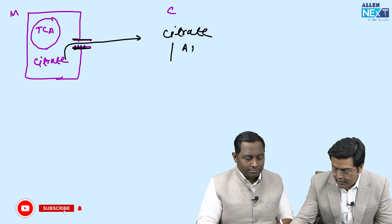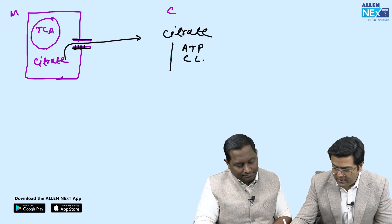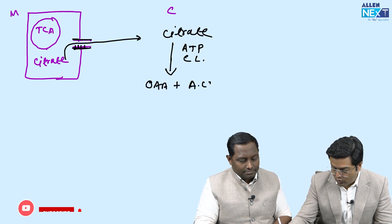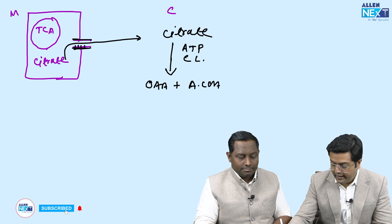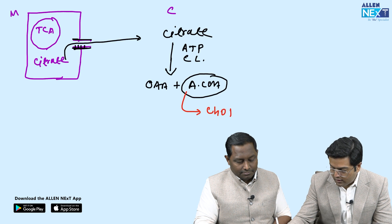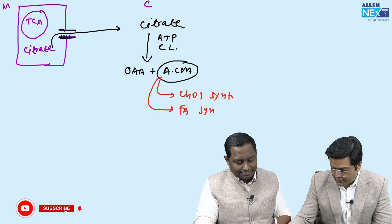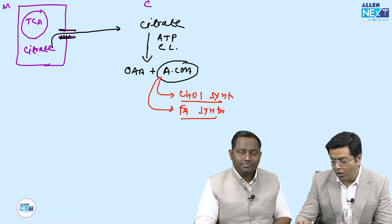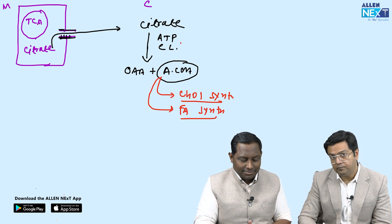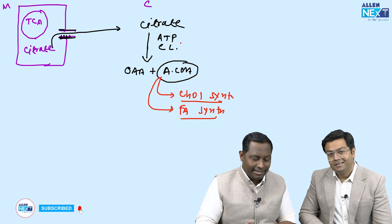This citrate will be broken down by the enzyme in our MCQ — that is ATP citrate lyase. 'Lyase' means to break into parts, so it breaks citrate into acetyl CoA and oxaloacetate. This acetyl CoA will then enter two pathways: cholesterol synthesis and fatty acid synthesis. So both these pathways have ATP citrate lyase in common.